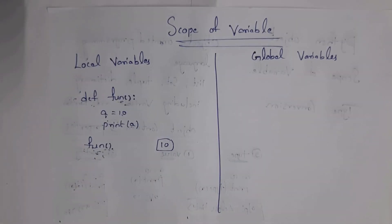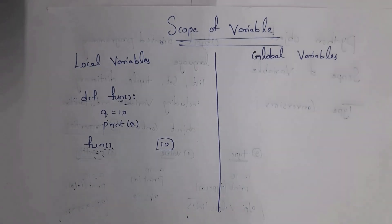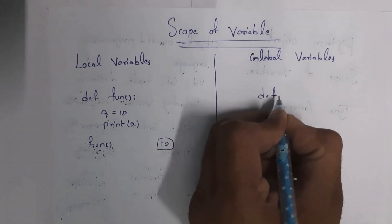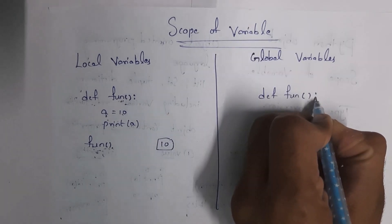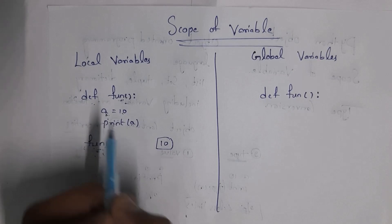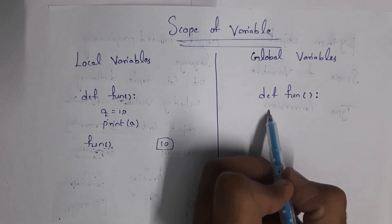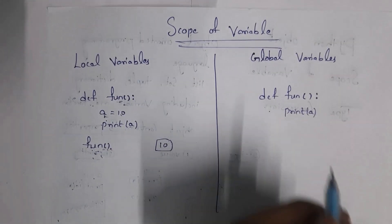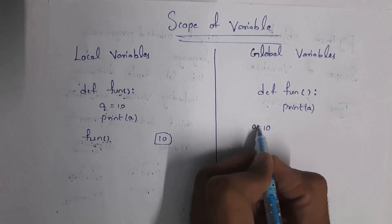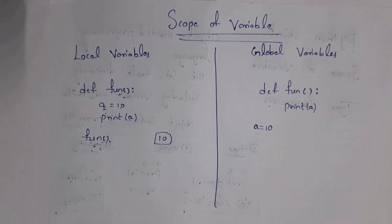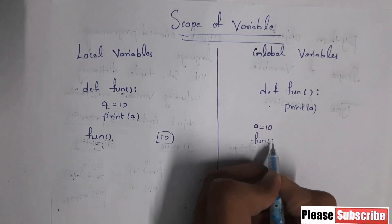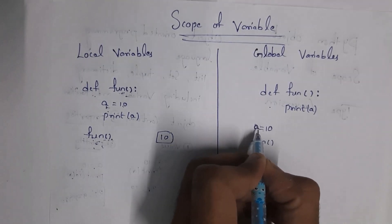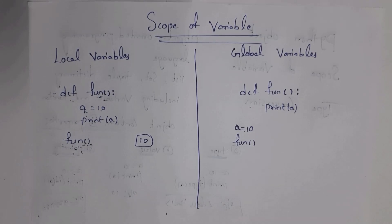Variables declared outside the function are known as global variables. For example, I create function 'fun' using def, and inside the function I write print(a). But this time I declare the variable outside the function by writing a = 10. After creating the function, I call it by writing fun(). Here 'a' is a global variable, and the output is 10.